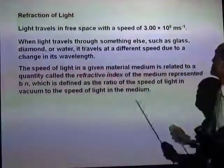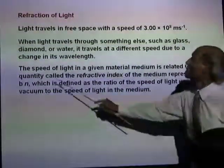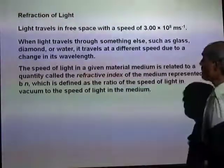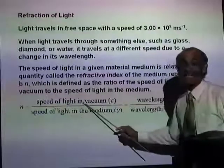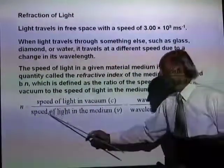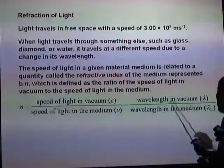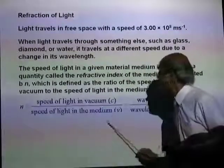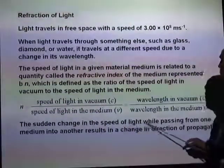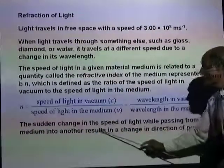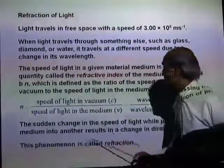The speed of light in a given material medium is related to a quantity called its refractive index, represented by the small letter n. The refractive index of a medium is defined as the speed of light in vacuum C divided by the speed of light in that medium, which is also the same as the wavelength of the light in vacuum divided by the wavelength in the medium. The sudden change in the speed of light while passing from one medium into another results in a change in the direction of propagation — and it is that phenomenon that we call refraction.